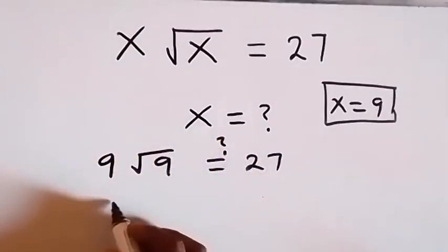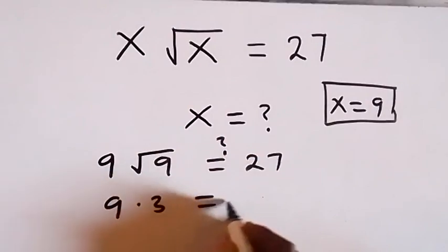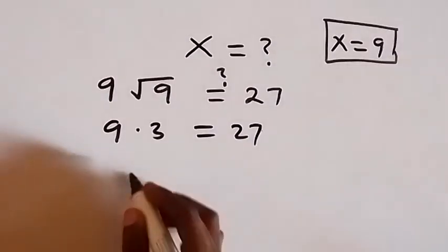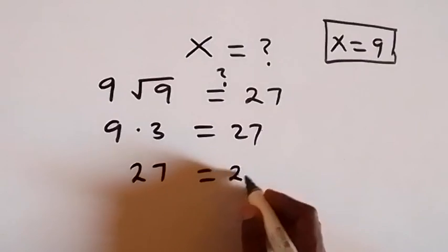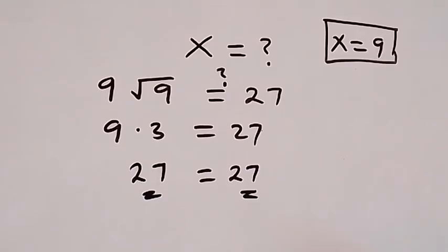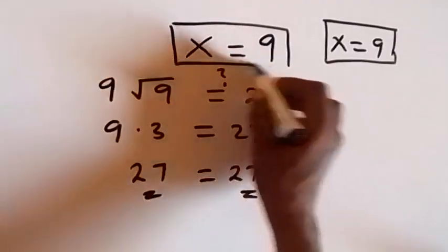9 times root 9 is 3. 9 times 3 equals 27, which equals 27. Left hand side equals the right hand side. Hence, we can conclude that x equals to 9 is the solution to this given problem.